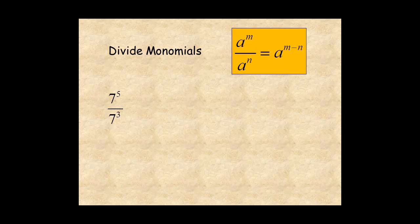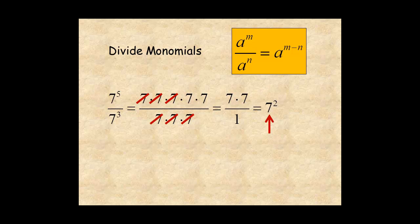This rule is easy to understand. For this expression, 7 to the power of 5 over 7 to the power of 3, you have 5 factors of 7 in the numerator and 3 factors of 7 in the denominator. 3 factors in the numerator cancel with 3 factors in the denominator, leaving 2 factors of 7, which is written as 7 to the power of 2. So the rule makes sense. To divide 7 to the power of 5 by 7 to the power of 3, subtract the exponents 5 minus 3 for 7 to the power of 2.